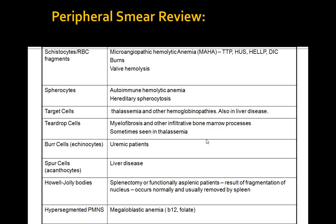Hypersegmented neutrophils are seen in megaloblastic anemia. Schistocytes and RBC fragments are seen in burn patients or those with microangiopathic hemolytic anemia such as TTP, HUS, and DIC. The peripheral smear can definitely help narrow your differential. Bite cells are seen in G6PD deficiency, from removal of Heinz bodies by phagocytes.